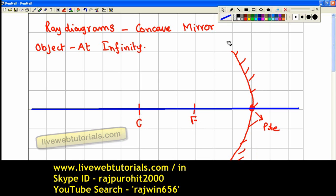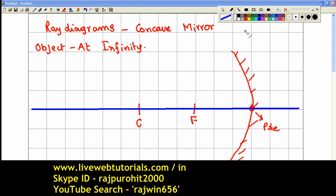Now the rays are coming from infinity. Whenever these rays are coming from infinity, these rays are always going to be parallel.